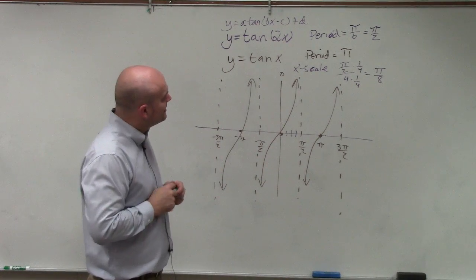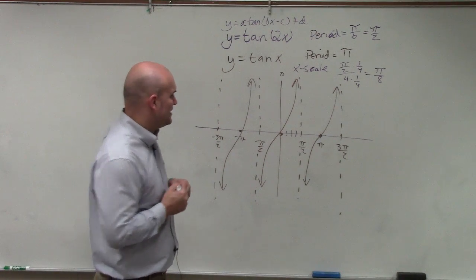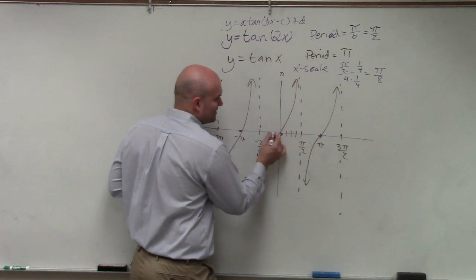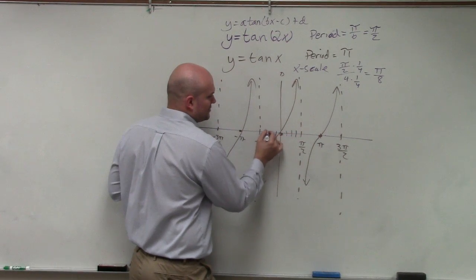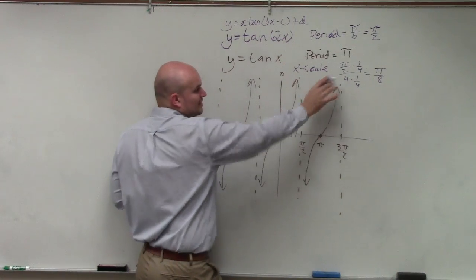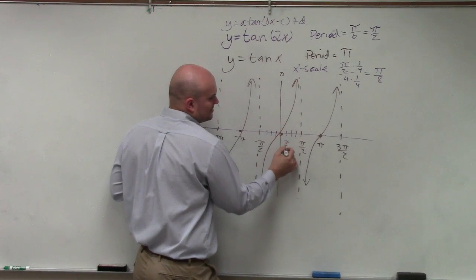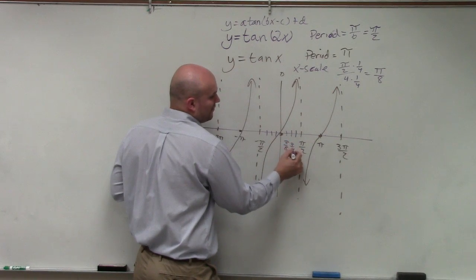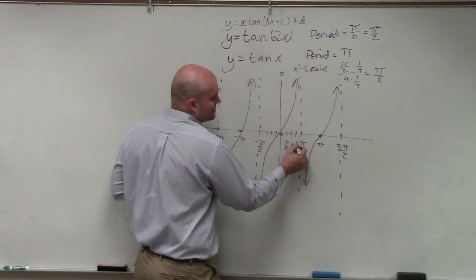You know what? I did tell you to do the scaling, but that's kind of getting confusing. But anyways, 1, 2, 3, 1, 2, 3. So now if these are going to be pi eighths, this is 2 pi eighths, which is the same thing as pi fourths. This would be 3 pi eighths. Does everybody agree with me?